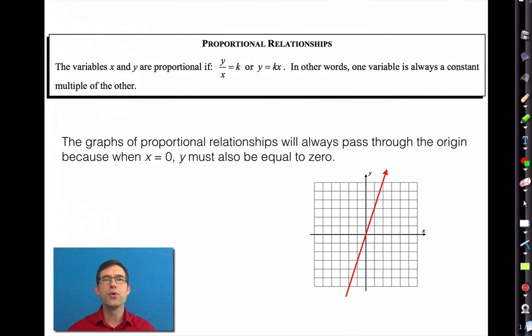For the last few lessons, we've been looking at what are known as proportional relationships. Two variables are proportional, let's say y and x, if when we divide them we always get the same constant. When we look at a proportional relationship like this, we can always rearrange it by multiplying by x on both sides, telling me that y can always be found by multiplying x by some constant.